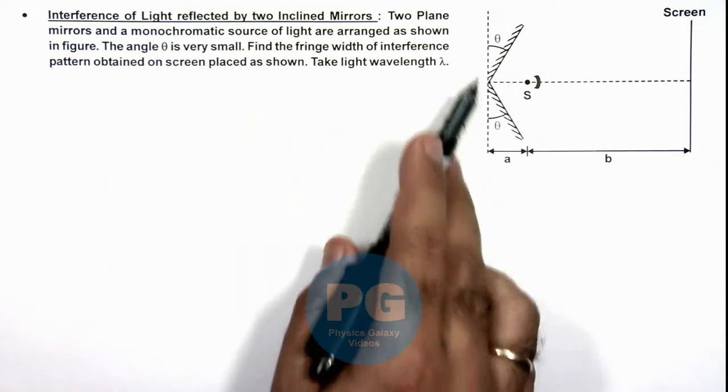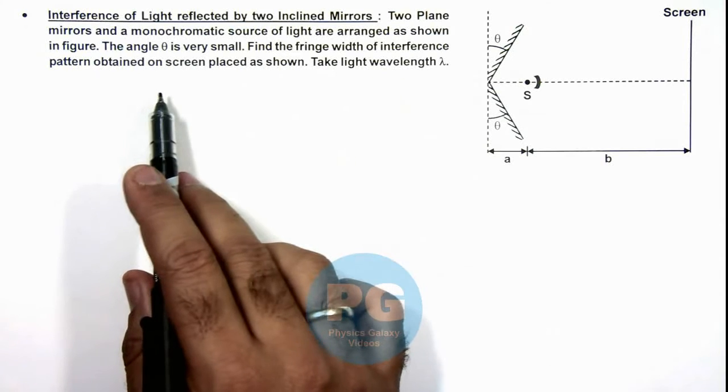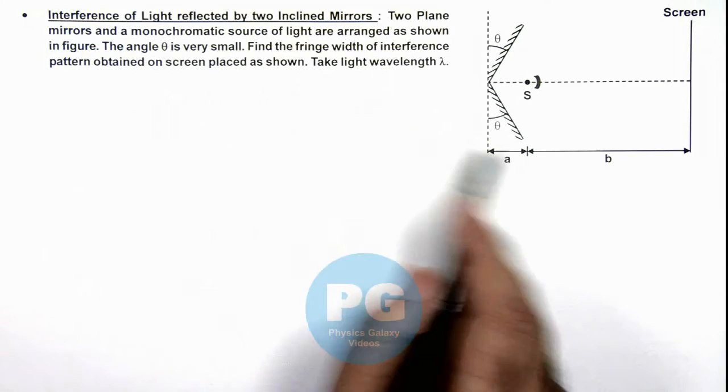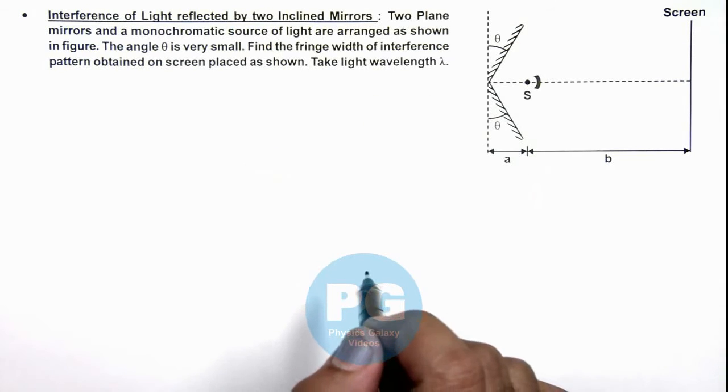This is a setup which we call Lloyd's mirror setup for interference of light. Here the angle theta is very small and we are required to find the fringe width of interference pattern obtained on screen as shown. The light wavelength is also given to us as lambda.